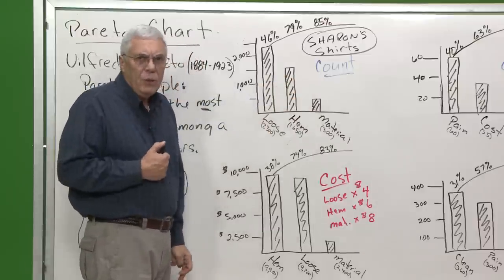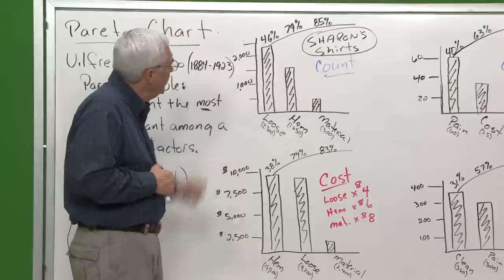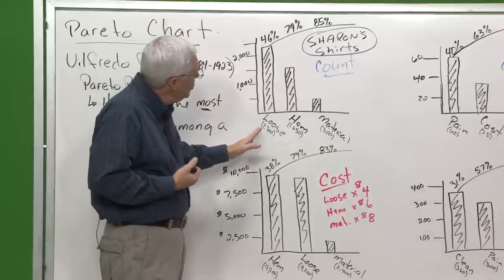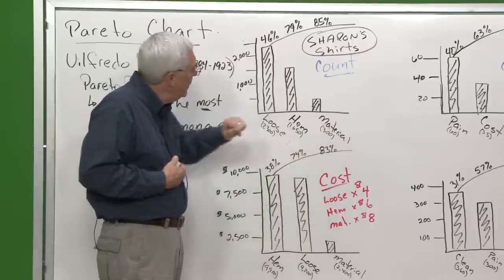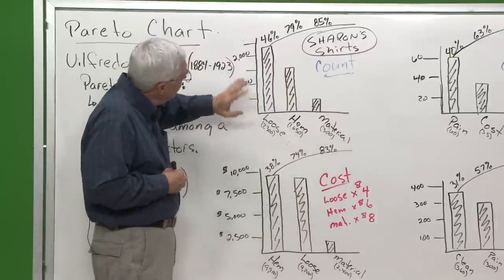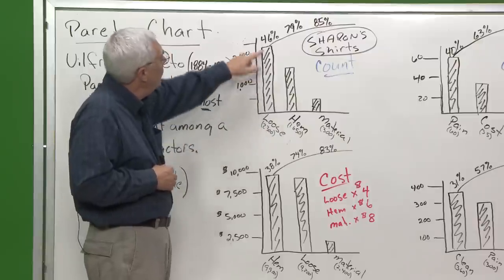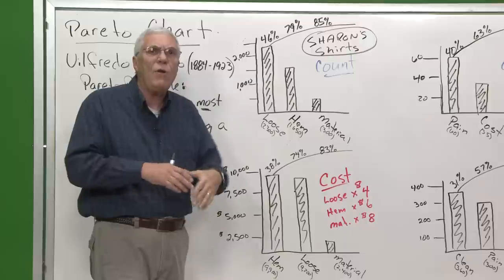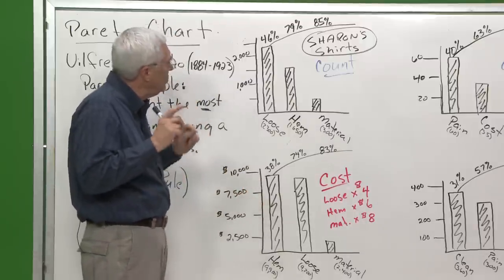Now what I'm going to do is start to create the Pareto line. The Pareto line means I'm going to take the grand total of all defects, and then divide the 2,300 by that. And what I find is that loose threads represent 46% of all my defects.